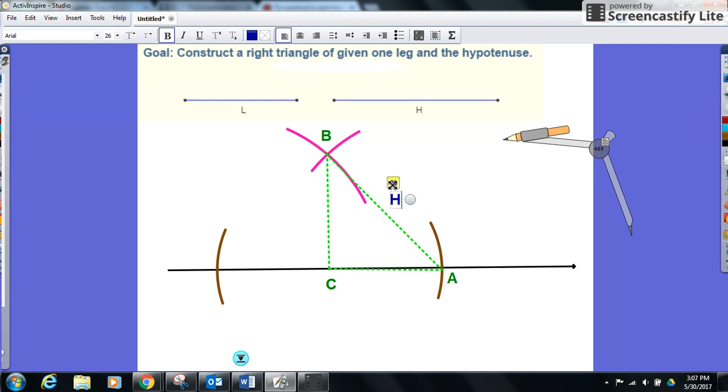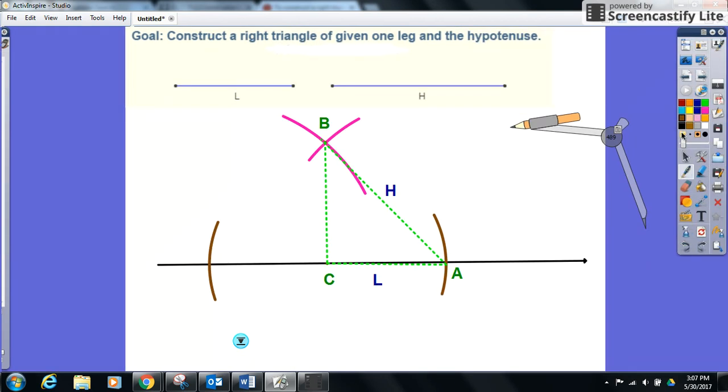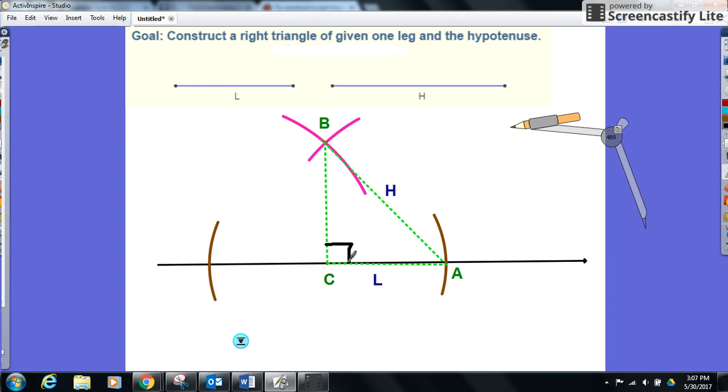That has length H, this has length L, and here is my right angle. So again, this is the construction for a right triangle given one leg and the hypotenuse.